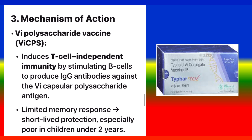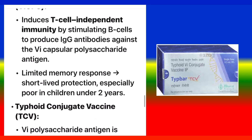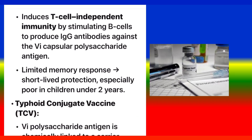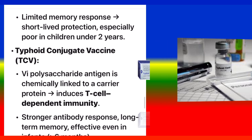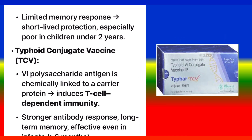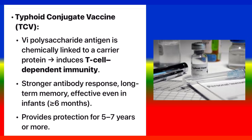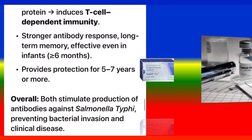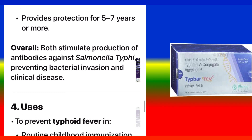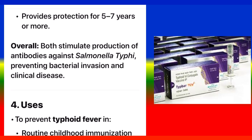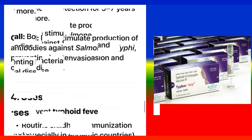Mechanism of Action: The Vipolysaccharide vaccine (VICPS) induces T-cell-independent immunity by stimulating B-cells to produce IgG antibodies against the Vi capsular polysaccharide antigen. It has a limited memory response and short-lived protection, especially poor in children under 2 years. The Typhoid Conjugate Vaccine (TCV) chemically links the Vi polysaccharide antigen to a carrier protein, inducing T-cell-dependent immunity with stronger antibody response, long-term memory, and effectiveness even in infants from 6 months, providing protection for 5 to 7 years or more. Overall, both stimulate antibody production against Salmonella typhi, preventing bacterial invasion and clinical disease.